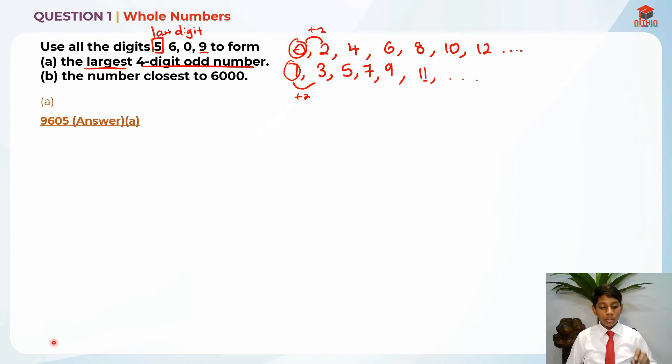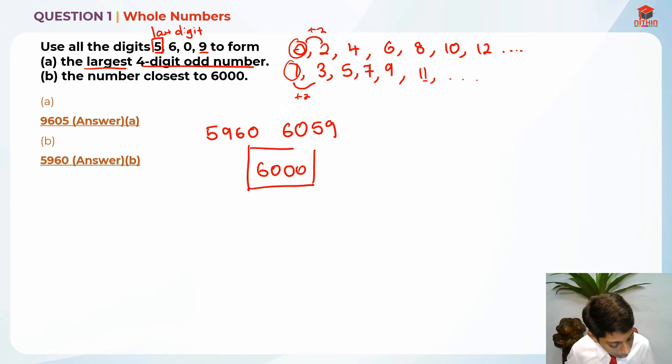And part B, the number closest to 6,000. Actually, there are two scenarios. The answer is actually 5, 9, 6, 0. So let me explain the two scenarios. Basically, we have 5, 9, 6, 0 here, and we also have 6, 0, 5, 9. So we will calculate how far is it away from the 6,000. So let's see how far away it is. So the lesser the further away it is from 6,000, the more closer it is to 6,000.